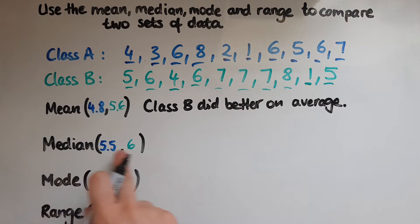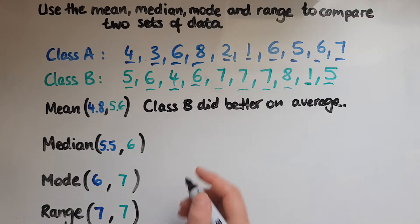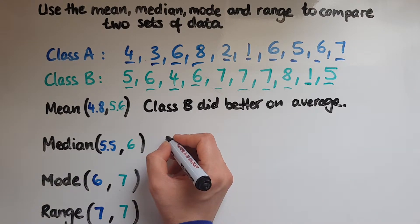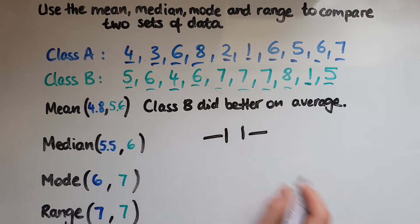The median also measures the average. So that is supporting the same thing that class B did better on average because they received on average 6 marks, whereas class A got 5.5 marks. Again, this supports that class B did better on average.